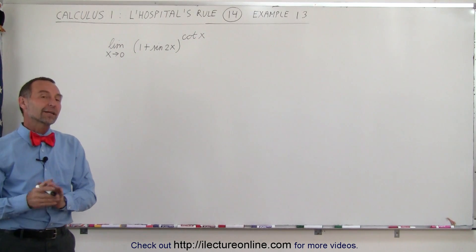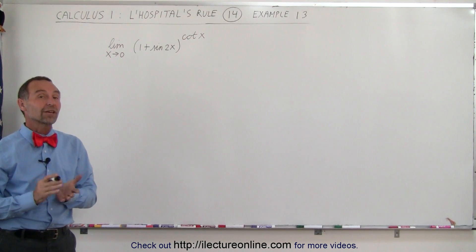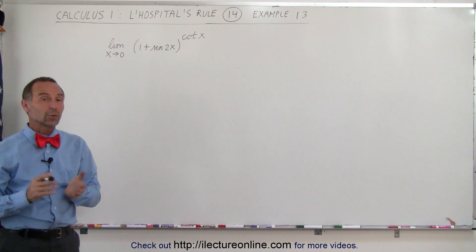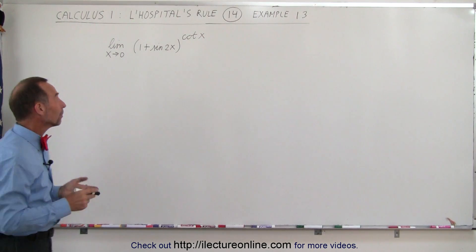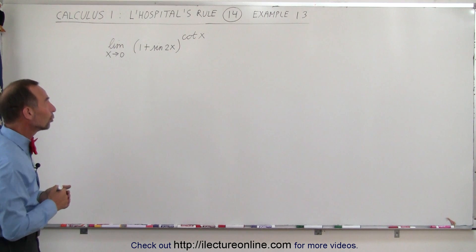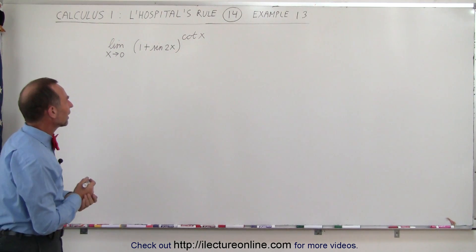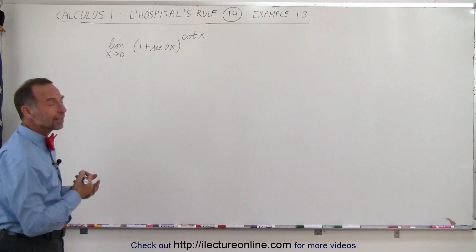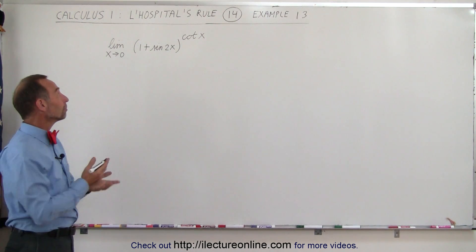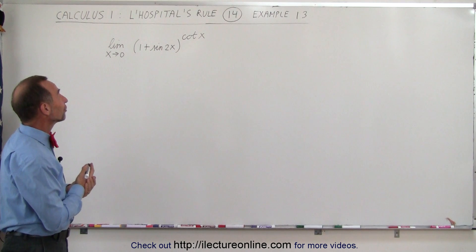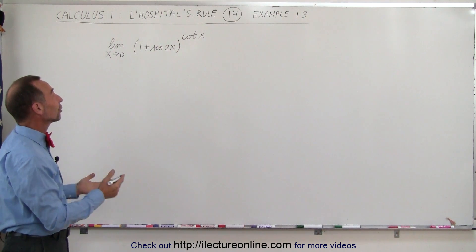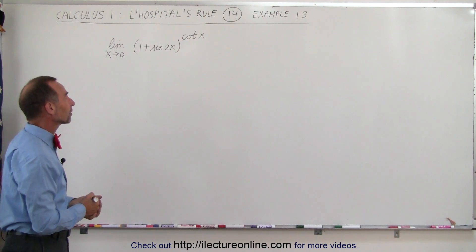Welcome to Electron Line. Here we have an interesting example in which we're going to try and apply L'Hôpital's rule. But first you look at that and go, wow, what am I dealing with here? The expression is 1 plus the sine of 2x, raised to the cotangent of x.